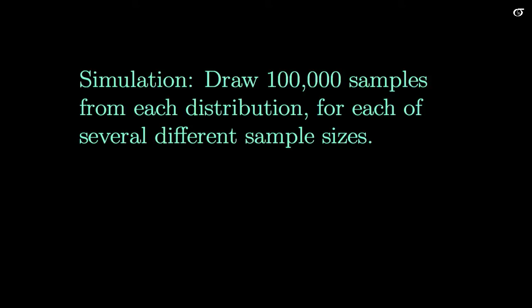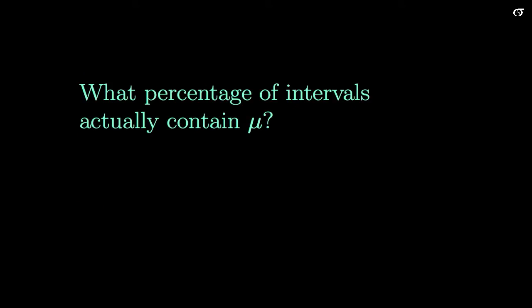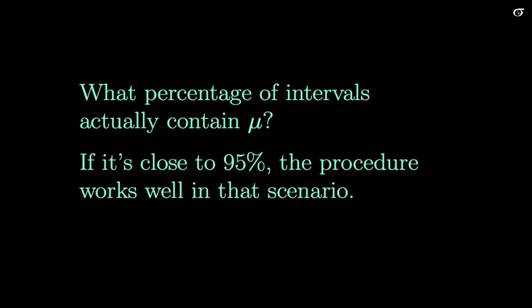The simulation works as follows: we're drawing 100,000 samples from each of these distributions, and we'll do this for different sample sizes. For each of these samples we're going to calculate a 95% interval, and then we're going to ask ourselves what percentage of those intervals actually contain the parameter mu. If that percentage is close to 95%, the procedures are working very well; if it's quite different from 95%, then the procedure is not working well.